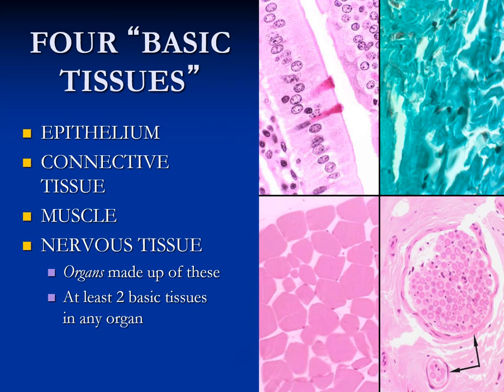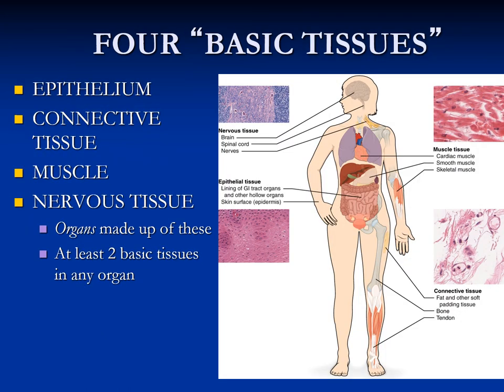This is very important: our body consists of four basic tissues — epithelium, connective, muscle, and nervous system. Any of our organs should have at least two of these tissues, but most of the time most of our organs have all four basic tissues. You should always remember: in our body we only have four basic tissues — epithelium, connective, muscle, and nervous tissue.